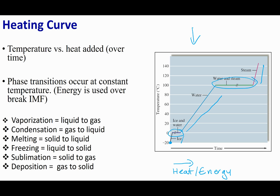When going through a phase change, the temperature remains constant — it's an isothermal process. You might have wondered where that heat and energy are going. Now that we've discussed intermolecular forces, we can say that the energy input is used to overcome the intermolecular forces — in other words, to break those attractive forces and push the molecules apart from each other.